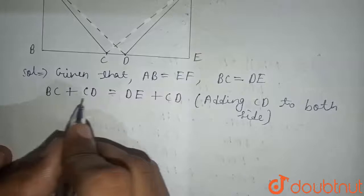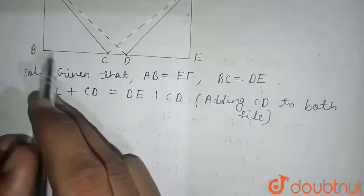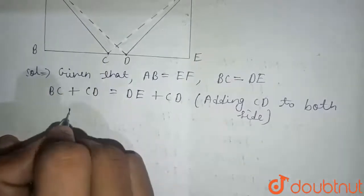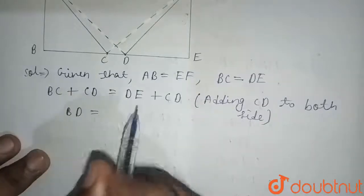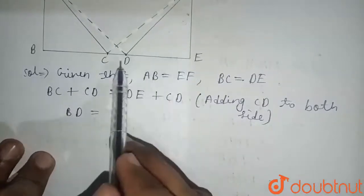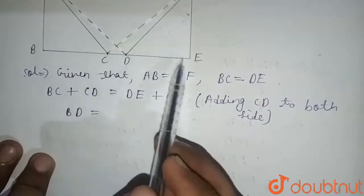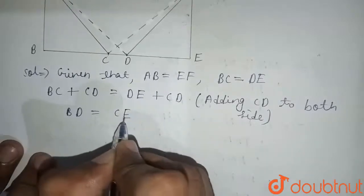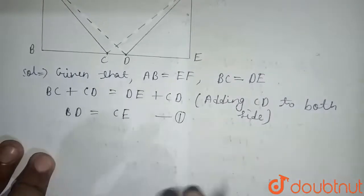BC plus CD equals DE plus CD. So we can write it as BD equals CE. This is equation first.